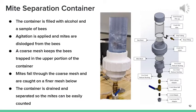The most important aspect of our design is the mite separation container. It is made of rugged but relatively inexpensive materials. The container is filled with alcohol and a sample of bees. Agitation is applied and viral mites are dislodged from the bees. A coarse mesh, denoted as bee mesh, keeps the bees trapped in the upper portion. The mites pass through the coarser mesh and fall into a finer mesh below where they are caught. The container is then drained of alcohol and separated at the threaded union. Upon separation, the mites can be easily counted on the finer mesh.